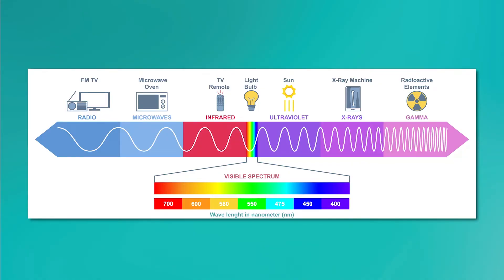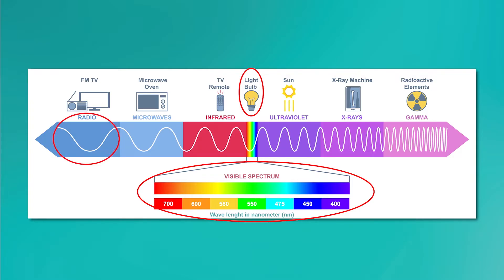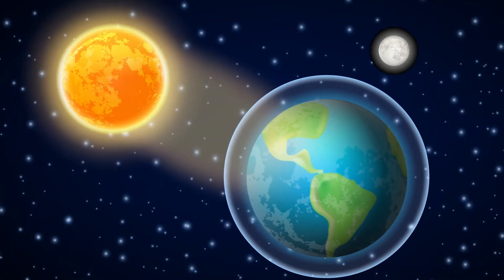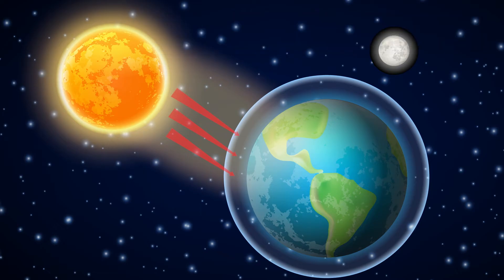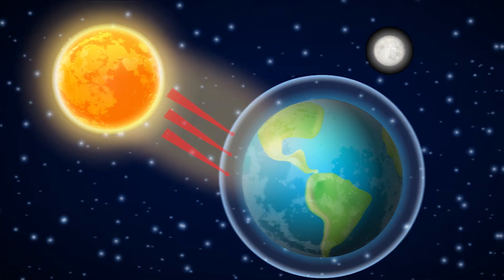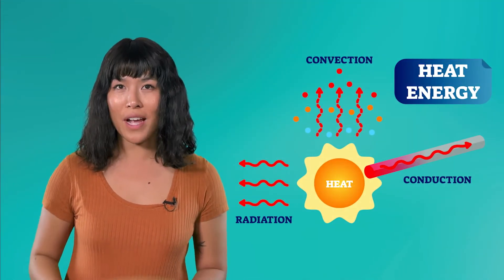Electromagnetic waves are waves of energy that travel through space at the speed of light. They include visible light, which we can see, as well as other types of waves we can't see, like radio waves, ultraviolet light, x-rays, and infrared light. These waves don't need a medium like air or water to travel — they can move through the vacuum of space. In the atmosphere, radiation refers to the transfer of energy from the sun to Earth through these electromagnetic waves. This is how the sun warms the Earth's surface without needing direct contact. Radiation describes heat moving through indirect contact.